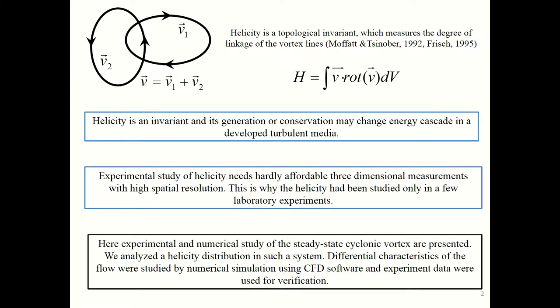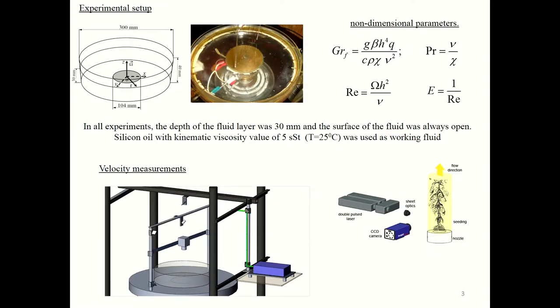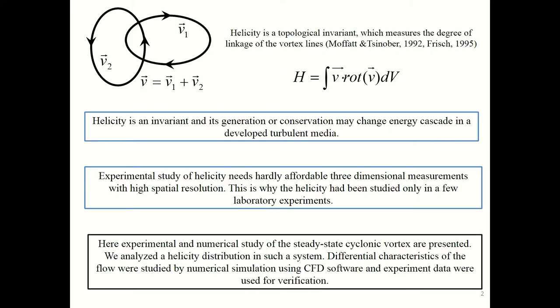Helicity is one of the most important characteristics for describing the structure of vortex flows. It's a topological invariant which measures the degree of linkage of the vortex lines, defined as the dot product of velocity and vorticity vectors. The volume integral calculated in a specific domain gives the total or global helicity.